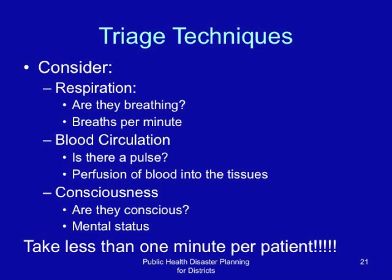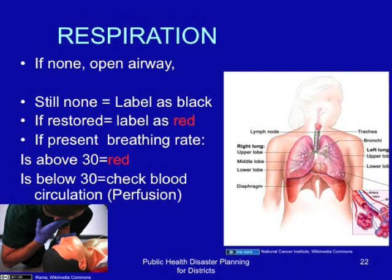Checking for respiration: if they are not breathing, open and clear the airway by extending the neck and clearing anything that may be in the mouth. If there is still no respiration, label as black. If respiration is restored, label as red. If respiration was initially present and the breathing rate is above 30 breaths per minute, or there is visibly fast breathing, label as red. However, if the breathing rate is below 30, proceed to the next stage — assessing saturation or perfusion.